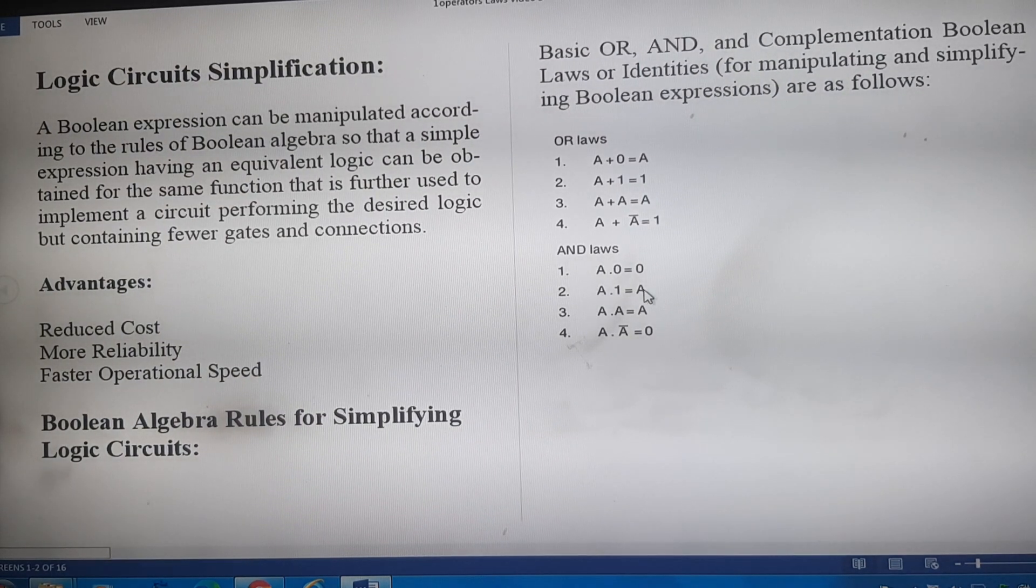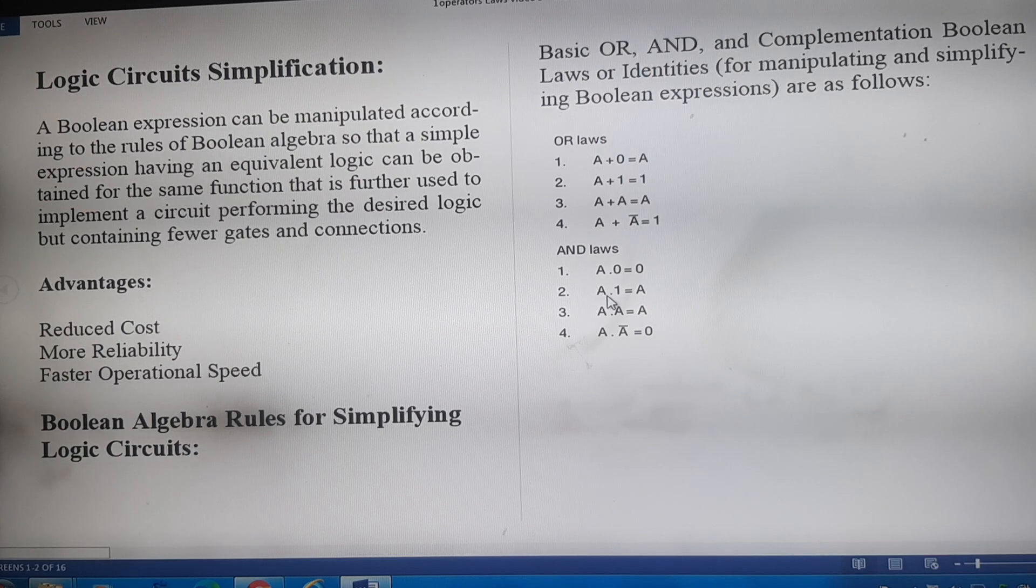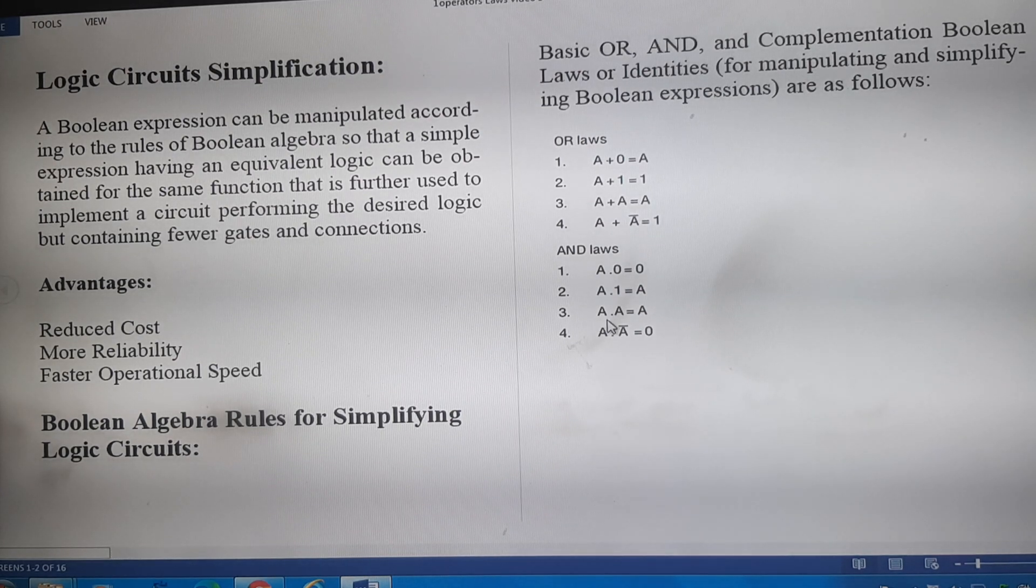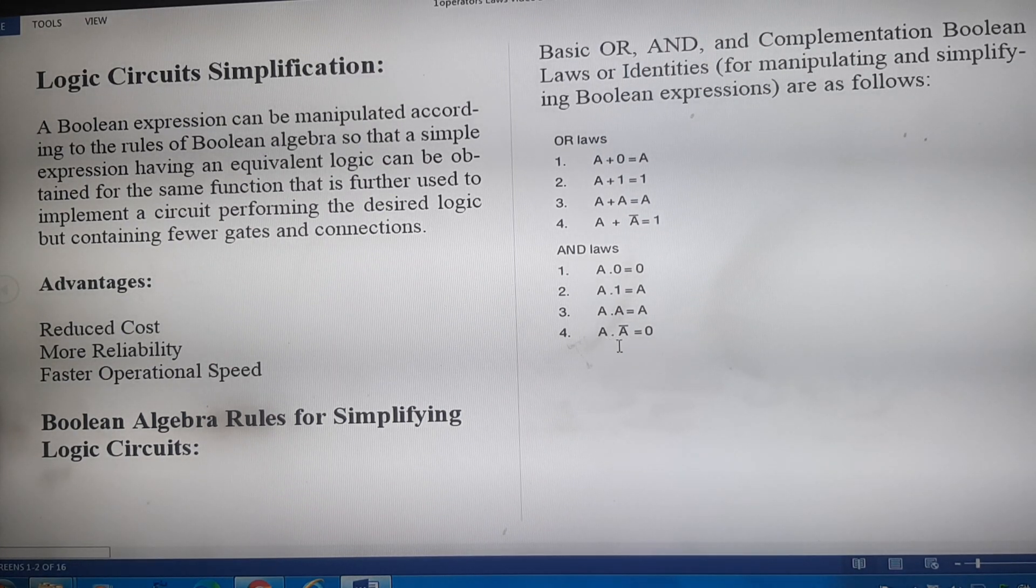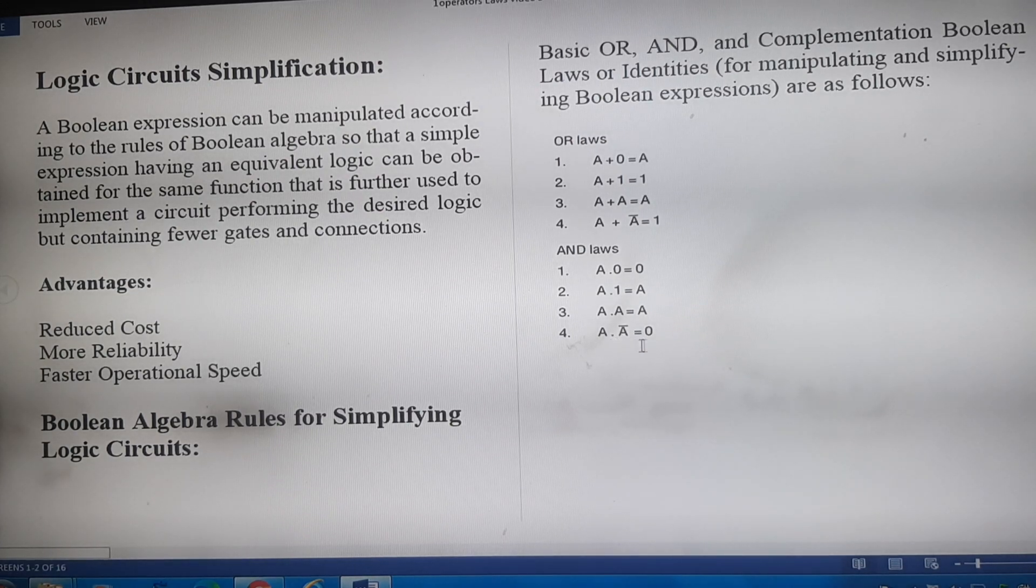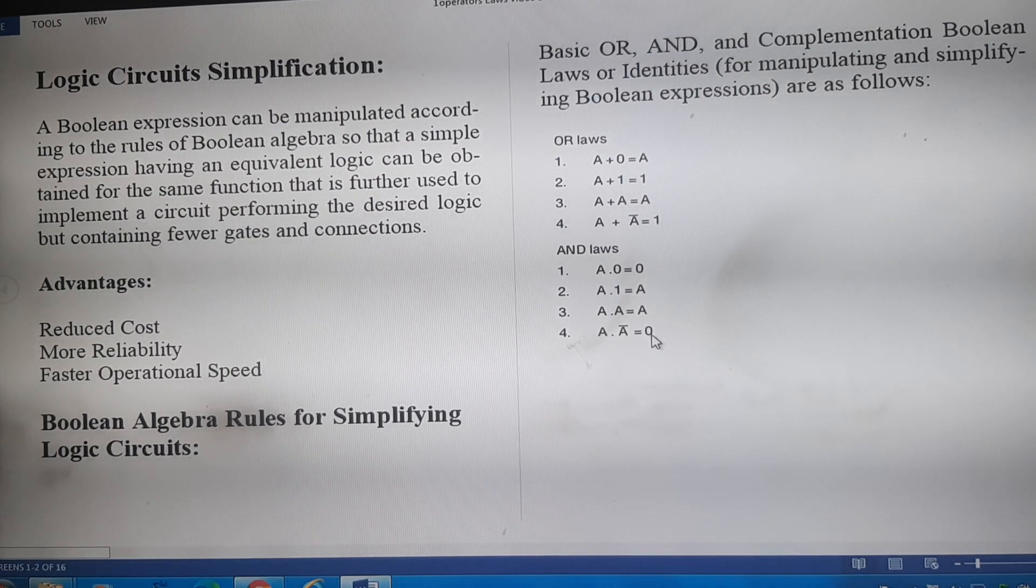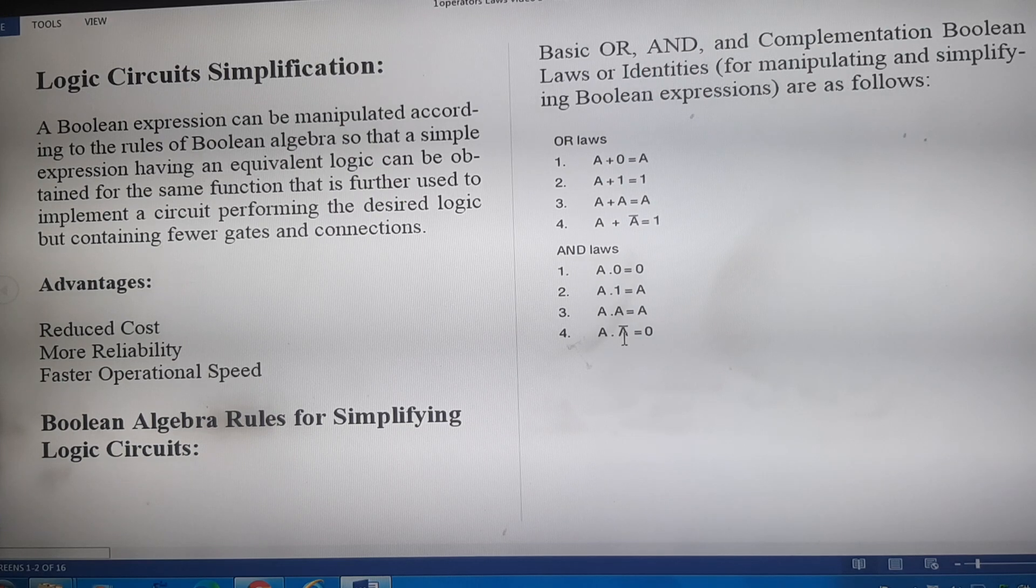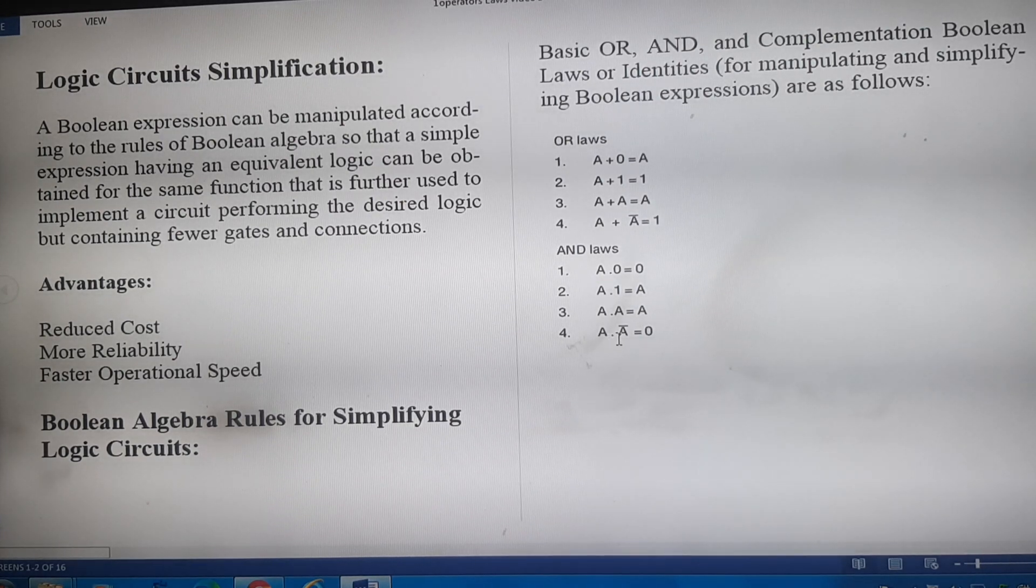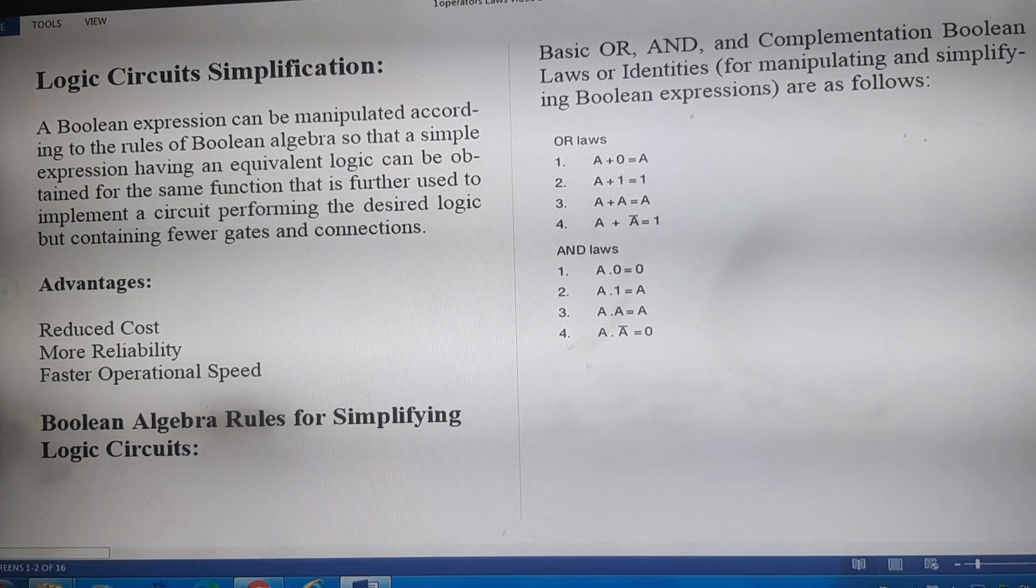AND laws state that if a variable is ANDed with 0, A·0 = 0. If any variable is ANDed with 1, it is equal to the variable itself. And if any variable is ANDed with itself, the output is the original variable. And if any variable is ANDed with its complement, it is equal to 0. Assume A is 0, then its complement is 1. So 0·1 = 0. Now assume A to be equal to logic 1, its complement is 0. So 1·0 = 0. So we will follow these laws to simplify our Boolean expression.